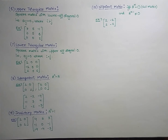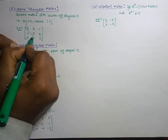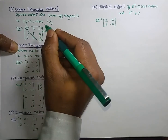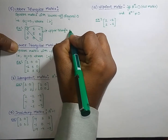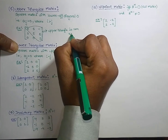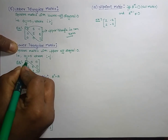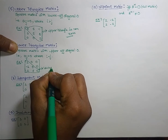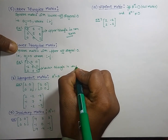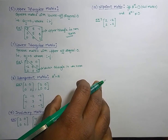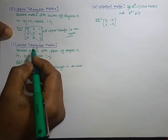Now let's look at upper and lower triangular matrices. In an upper triangular matrix, the upper triangle elements are non-zero, while all elements below the diagonal are zero. In a lower triangular matrix, the lower triangle is non-zero, meaning the elements above the diagonal are zero.